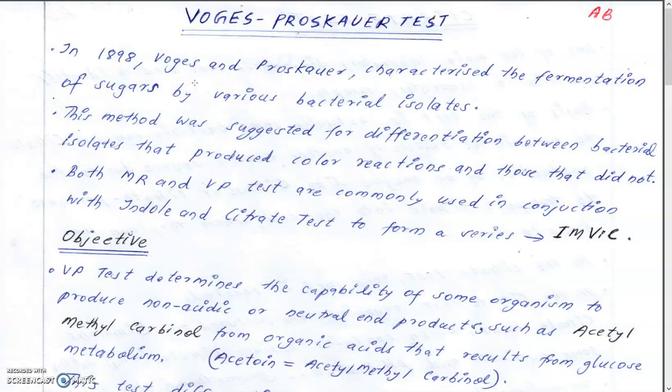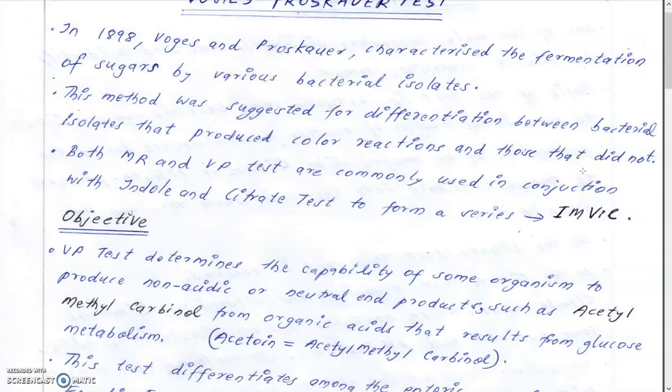The main aim of this test was to differentiate the bacteria which produced a color reaction and those that did not produce a color reaction. The Voges-Proskauer test is always done in conjunction with the Methyl Red test as they are both done in MRVP broth. Along with these two, the Indole and Citrate tests come together to form a series of tests known as IMViC, which is commonly used in the identification and differentiation of Enterobacteriaceae.